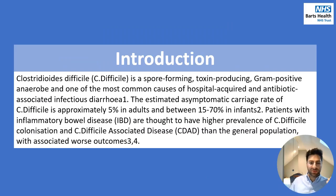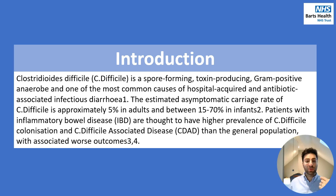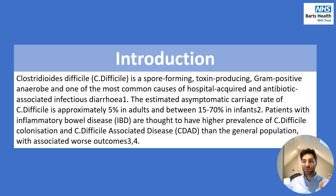So, why is this important? C. diff is a spore-forming, toxin-producing, gram-positive anaerobe and one of the most common causes of hospital-acquired and antibiotic-associated infectious diarrhoea. The estimated asymptomatic carriage rate of C. diff is around 5% in adults and between 15-70% in infants.